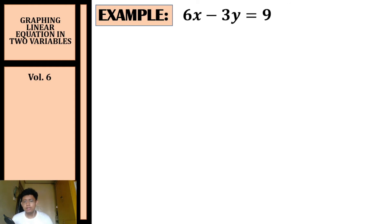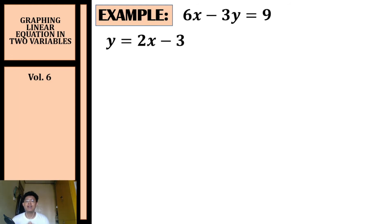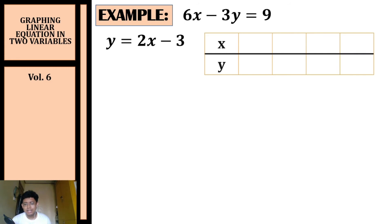Let's have another example. We're going to graph six x minus three y equals nine. The first thing we need to do is convert this to slope-intercept form, giving us y equals two x minus three. Then let's prepare our table of values.